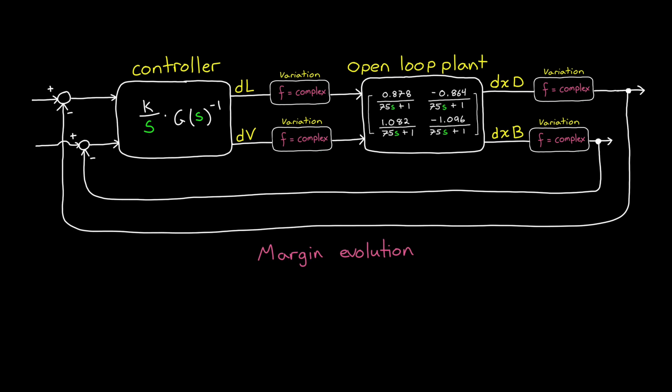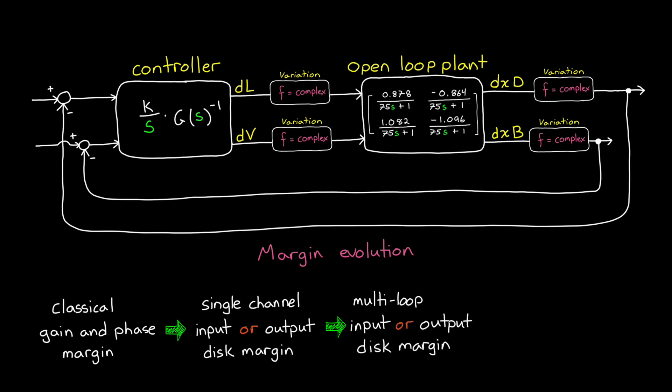So, you can see how we evolved from classical margins, which is just vary gain or phase on one channel, to simultaneously varying gain and phase with single channel disk margin, to then varying all of the inputs at the same time with multi-loop input disk margin, or all of the outputs at the same time, to finally varying both the inputs and the output simultaneously with multi-loop input output disk margin. And that's a mouthful, but each of these is telling us something different about the robustness of our system.